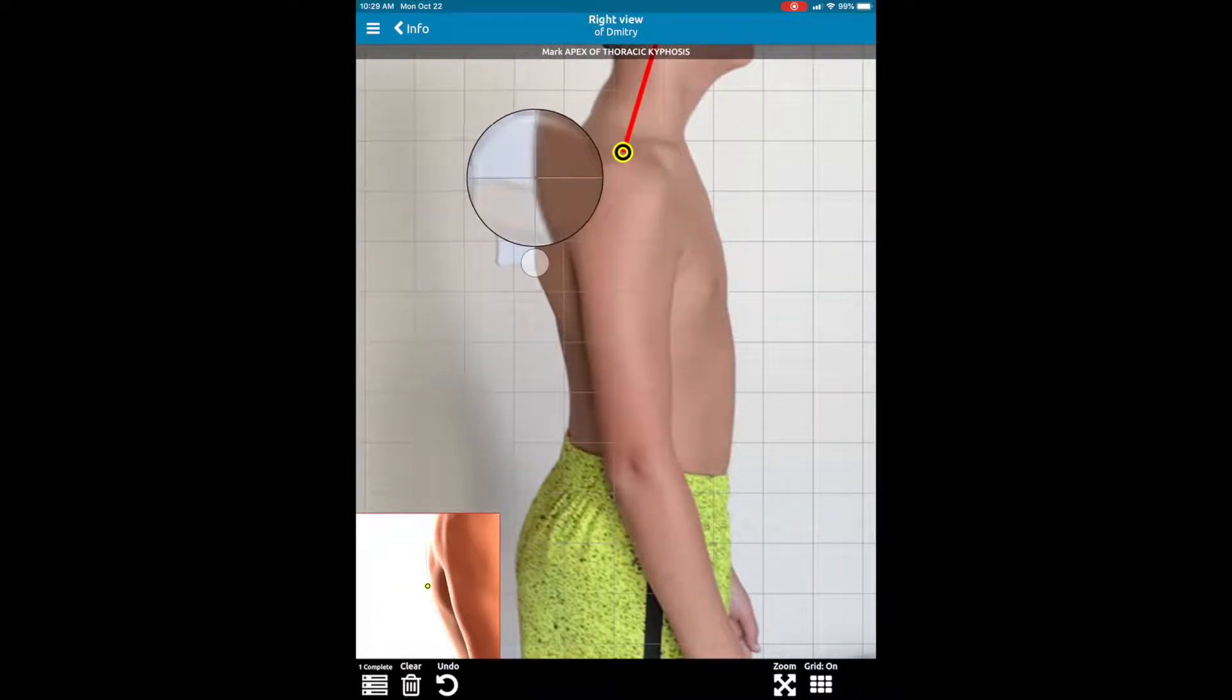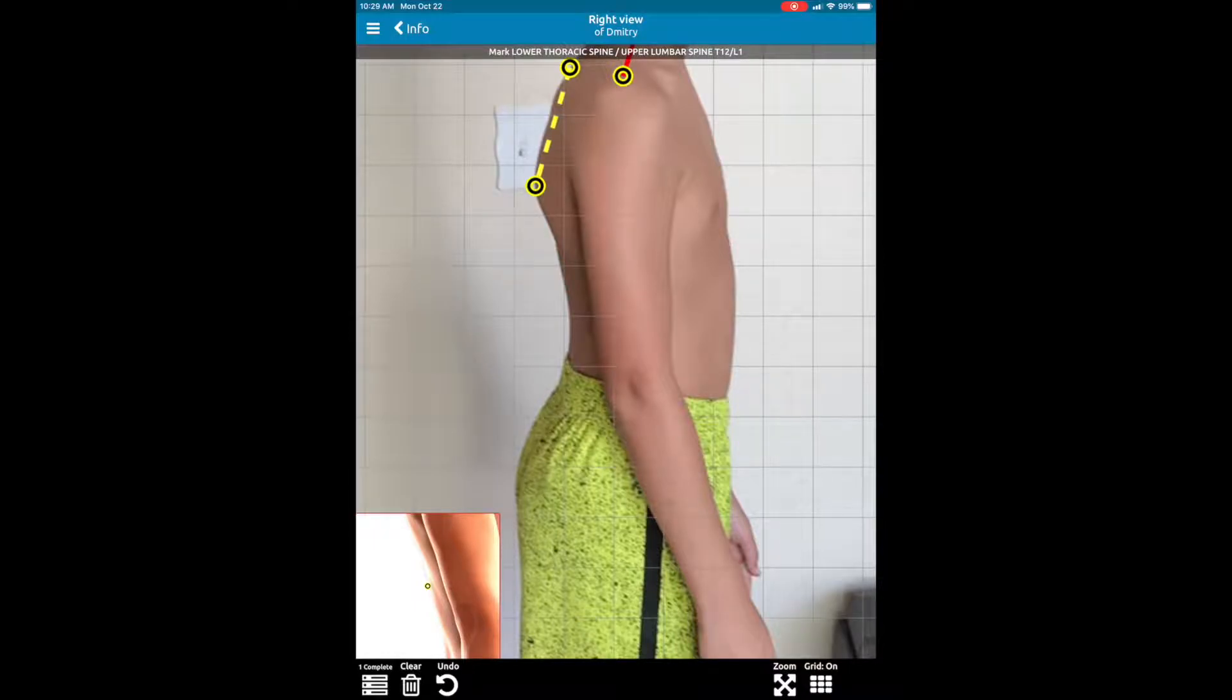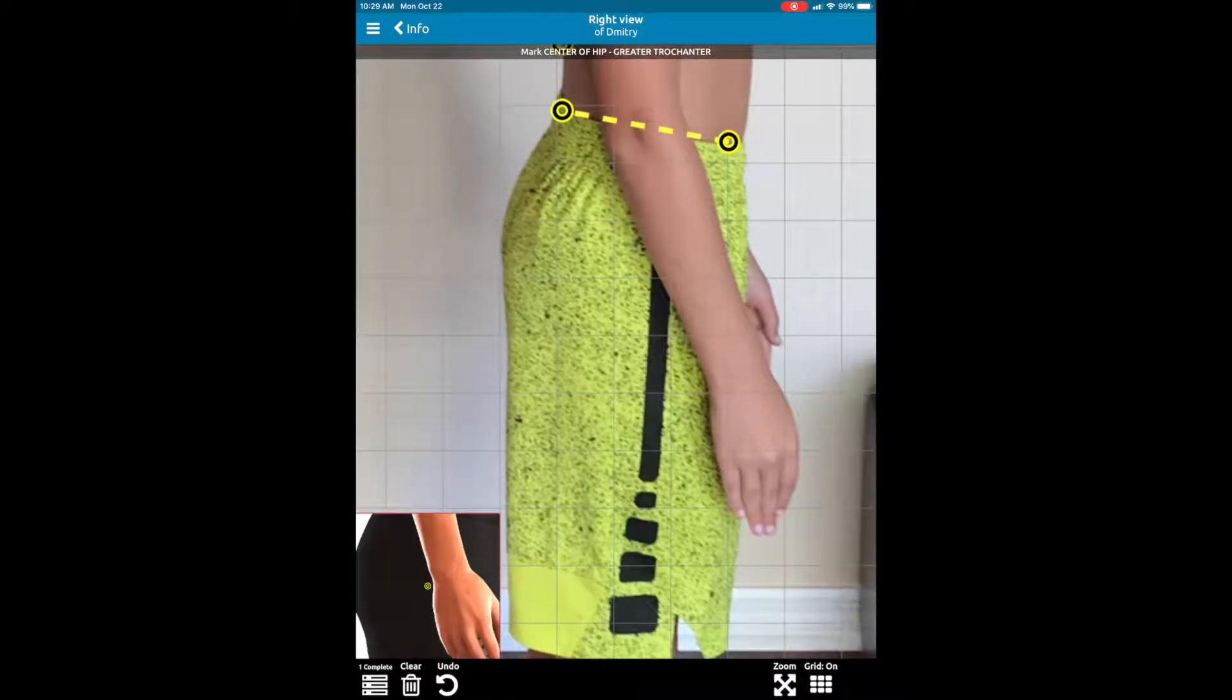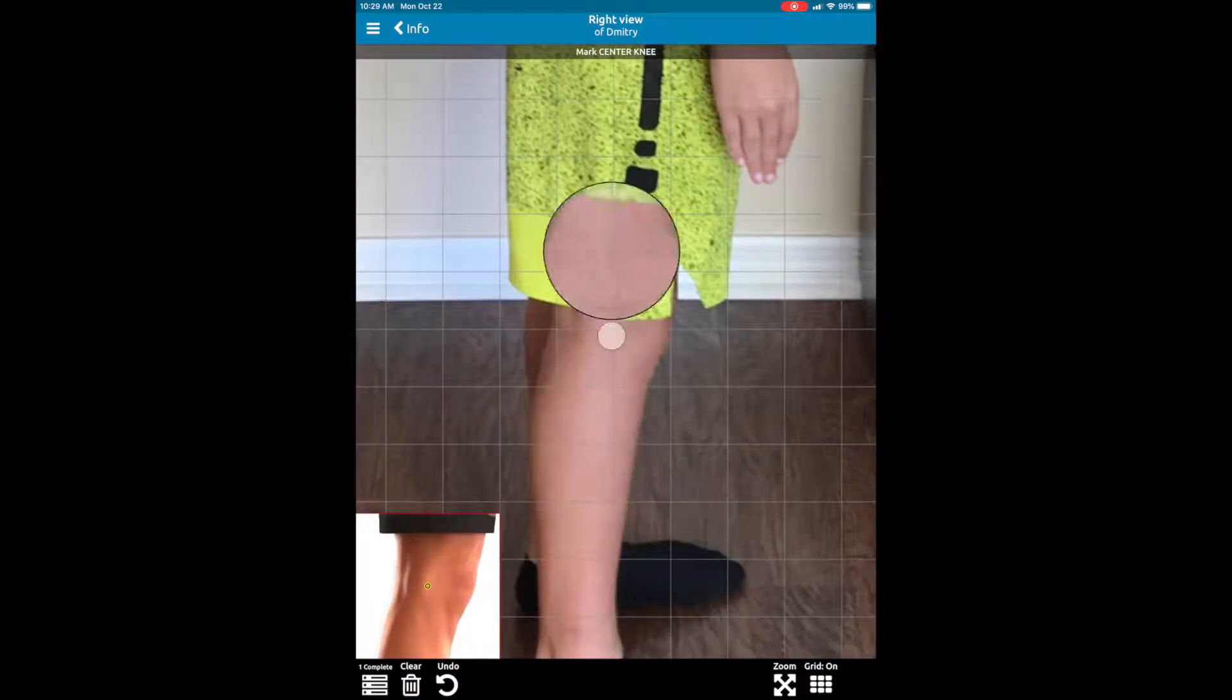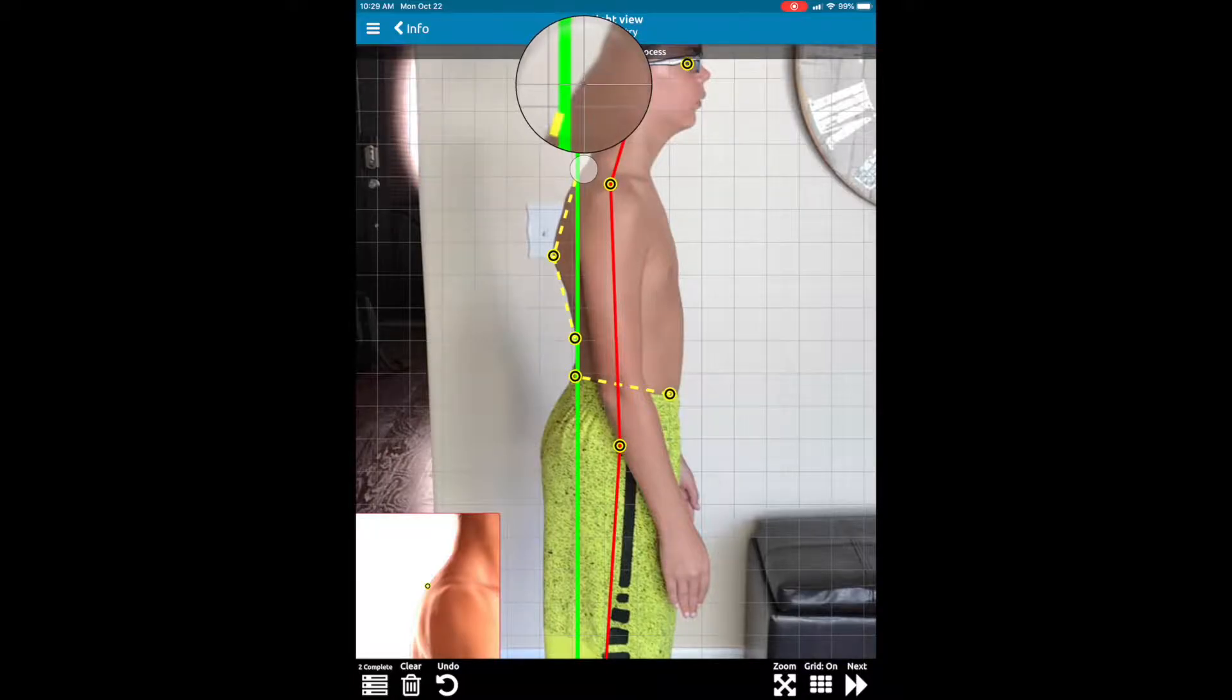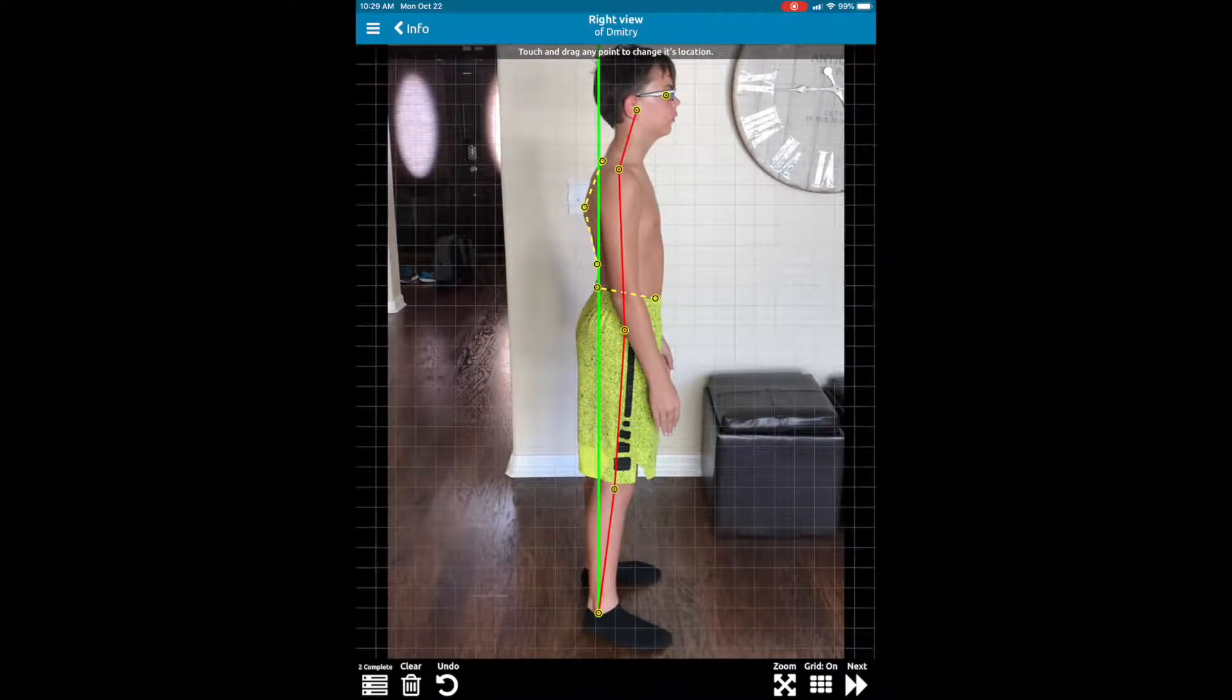Then we're going to do the apex of thoracic kyphosis. Then what we're going to do is we're going to go down approximately to the level of the elbow, or the kyphosis ends, maybe T12, L1, L2. As you zoom out of the picture again at the end, you can go ahead and fix these points if need be.